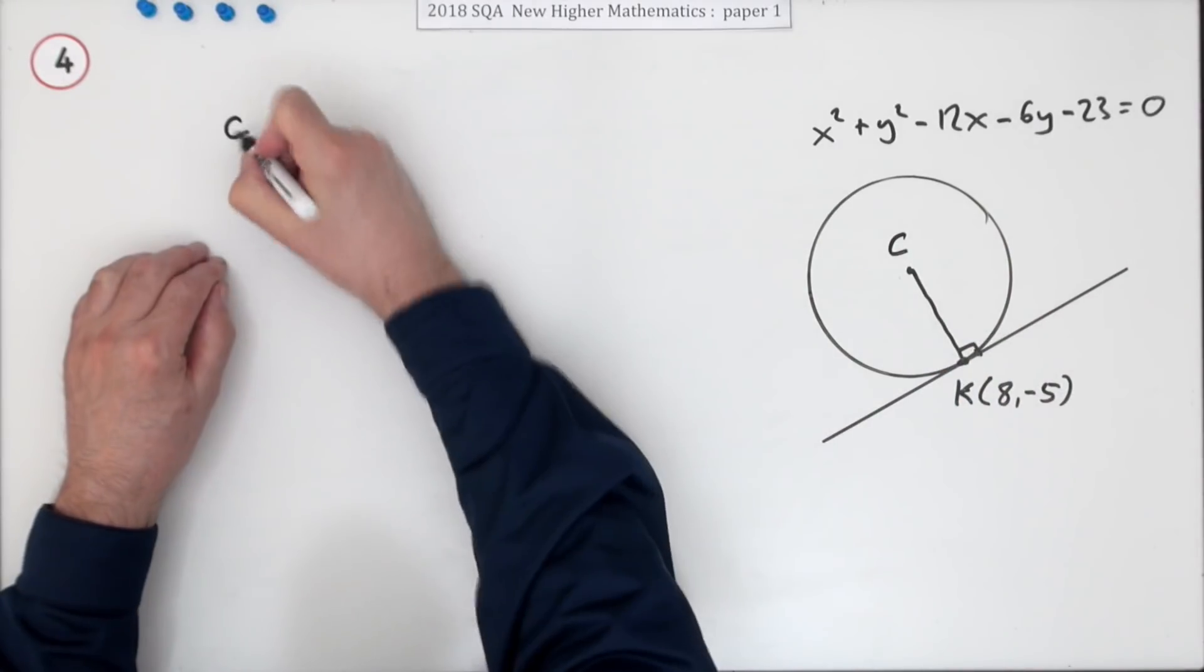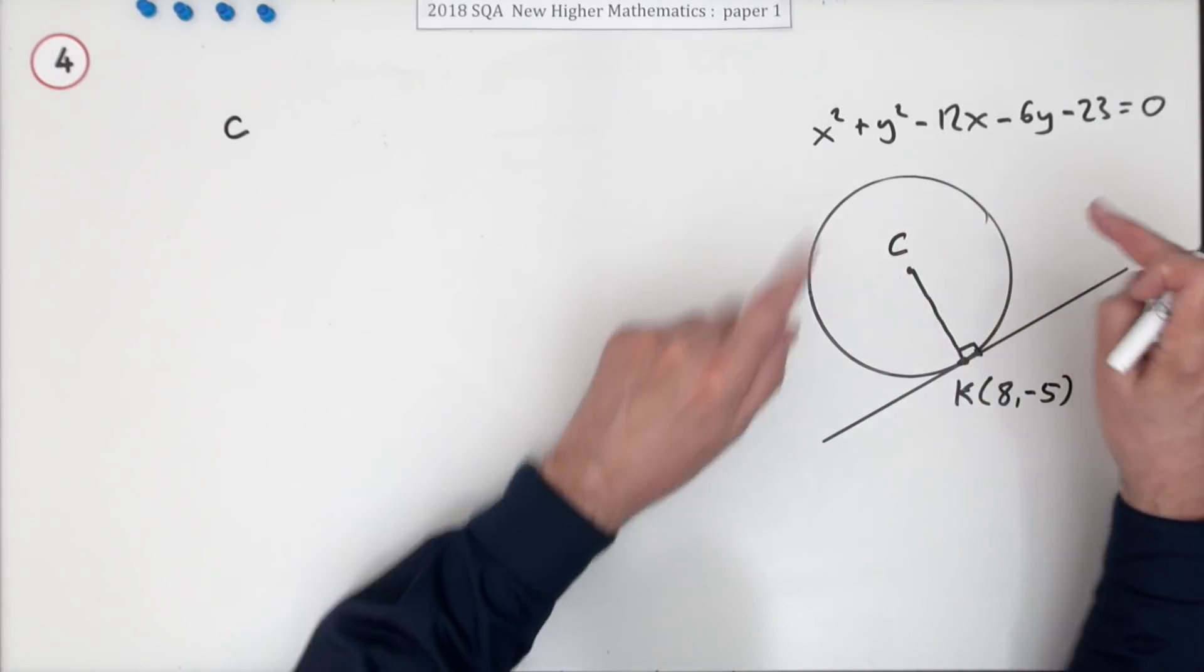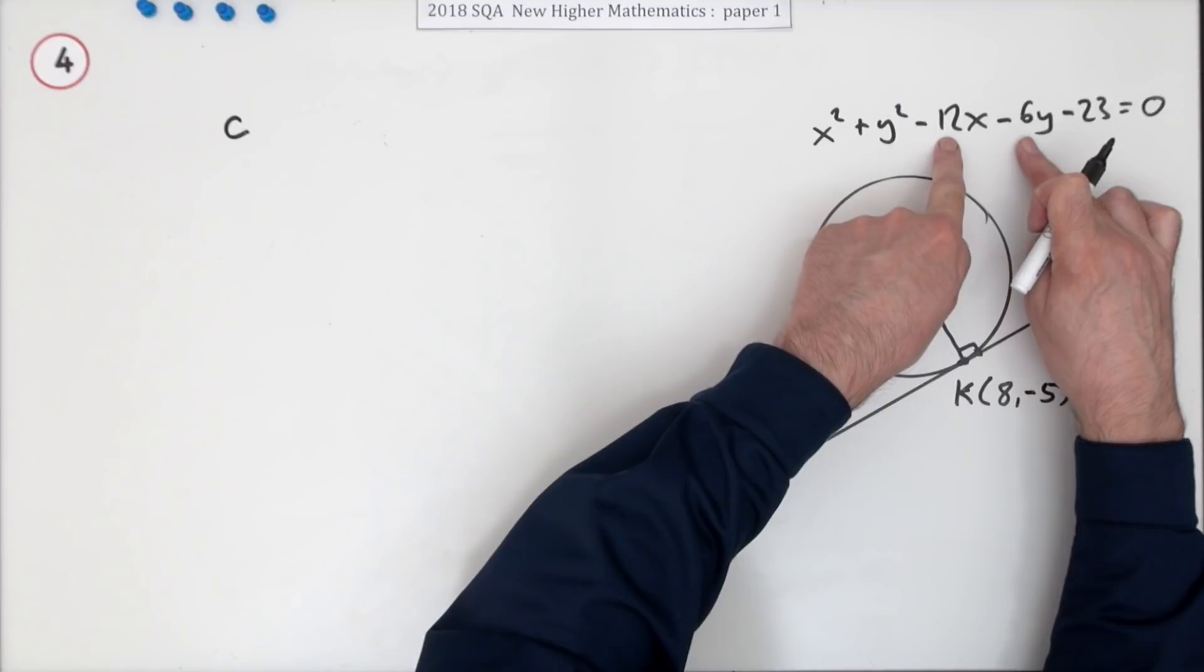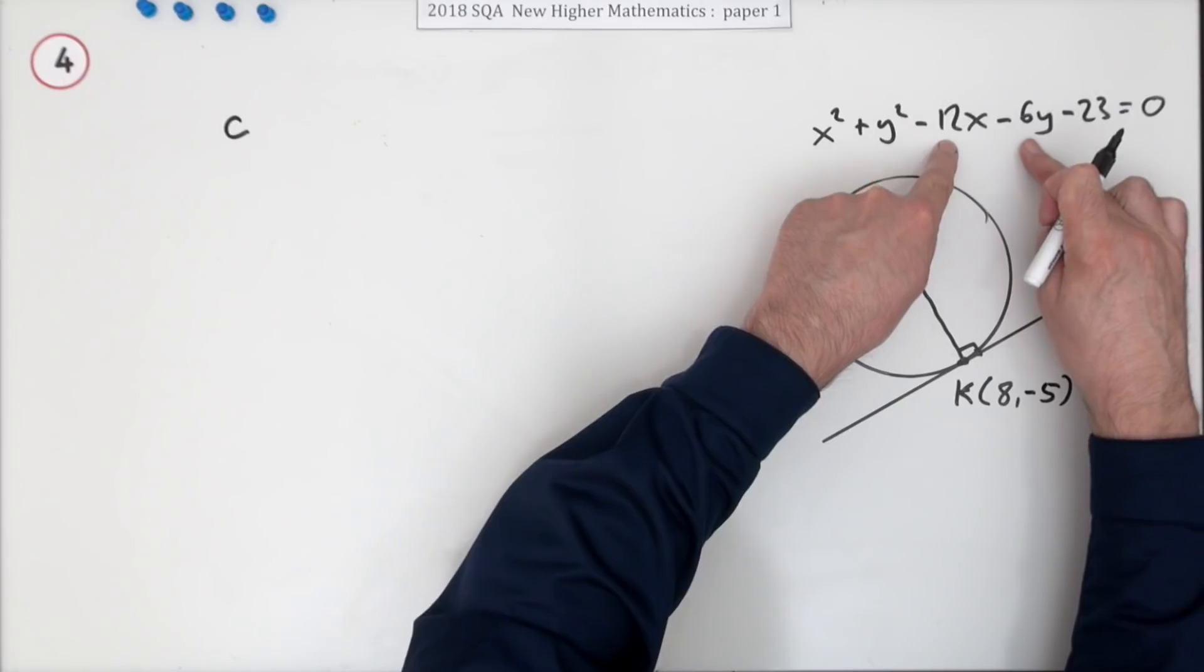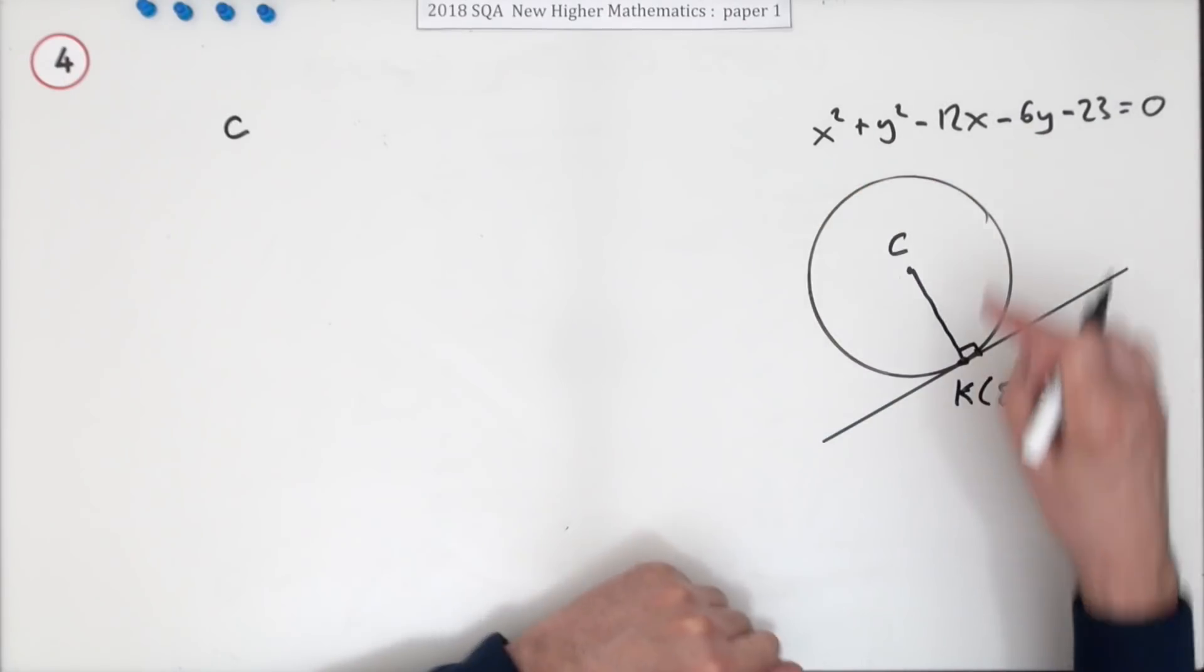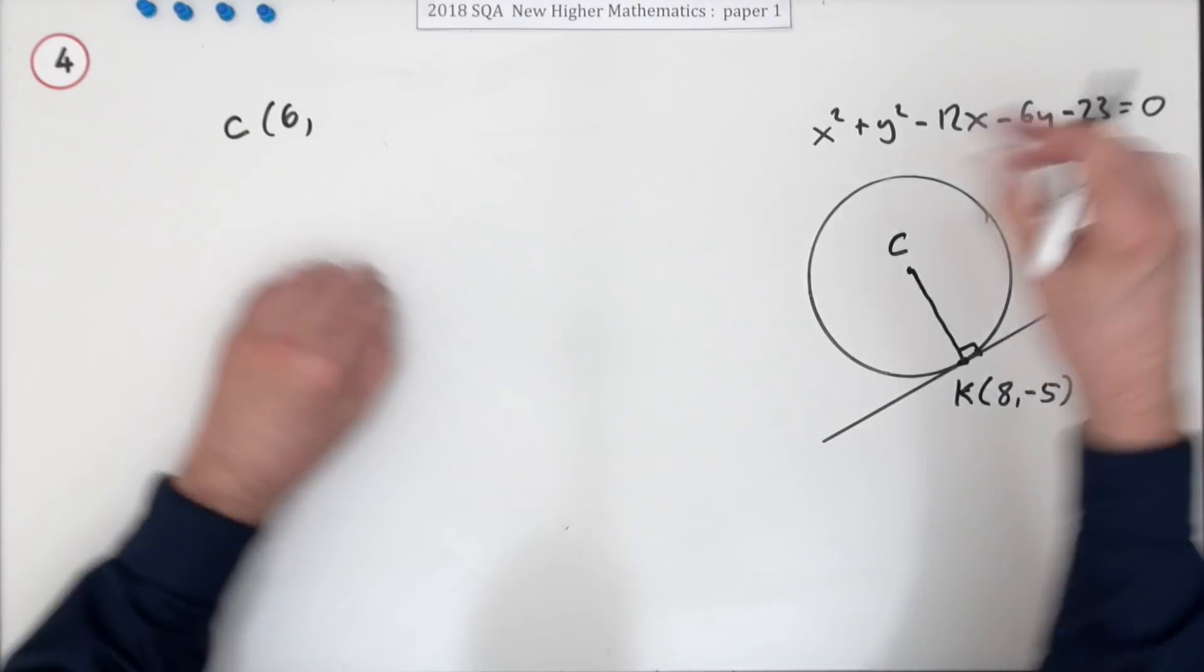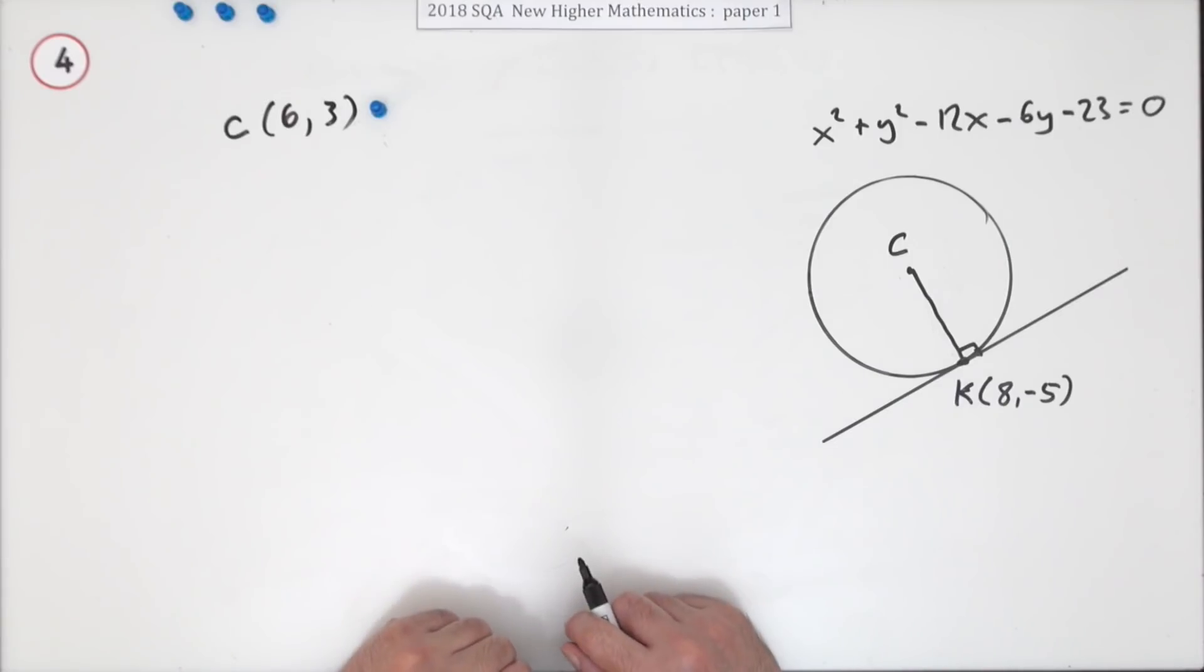Extract it from this equation. You don't need to bother with your f's and g's; you can identify it readily. It's these two coefficients. Half them, because when you square that bracket out (x - a)², they get doubled. Half them and change their signs. Half it and forget the negative makes the x-coordinate 6. Half it and forget the negative makes the y-coordinate 3. Just writing that down gets a mark.